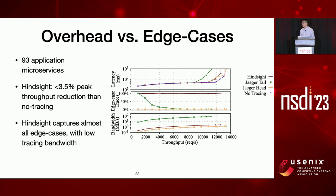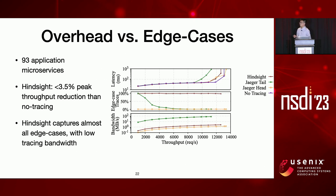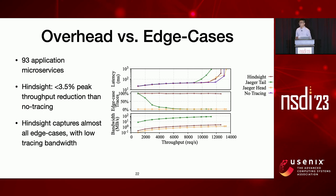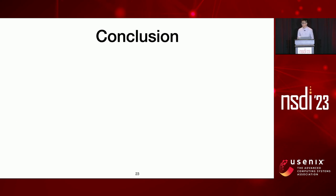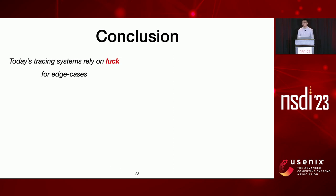Hindsight's overhead is similar to head sampling, while tail sampling shows much higher throughput reduction. Hindsight can capture almost all edge cases with low tracing bandwidth — similar to head sampling and much better than tail sampling. Importantly, Hindsight is capturing 100% of requests, whereas head sampling only has a 1% sample rate. As a conclusion, we argue that today's tracing systems rely on luck to track edge cases, and we propose retroactive sampling, which can trace every request and quickly collect all relevant data in time.